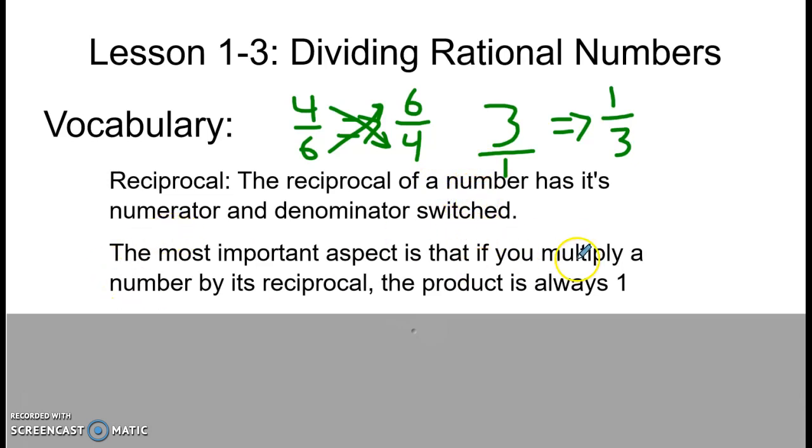The important aspect of reciprocals that we'll use later on is that if you multiply a number by its reciprocal, you're always going to multiply straight across. 3 times 1 is 3, and 1 times 3 is 3. You're going to end up with the same number for a numerator as you have for the denominator, which means that your fraction is going to be equal to 1. This is always going to be true for any number.